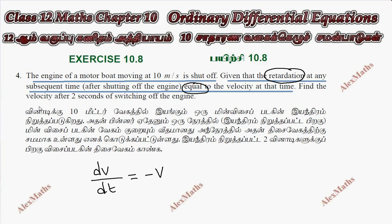Find the velocity after 2 seconds of switching off the engine. So this is the initial condition: at time zero the velocity is 10 meters per second. The boat is already moving and we shut off at time zero.